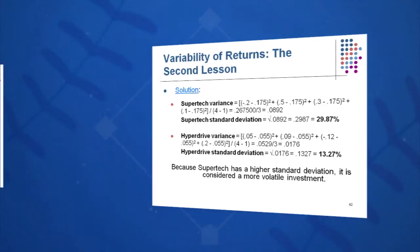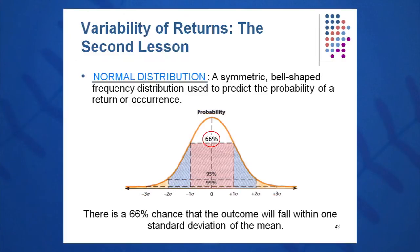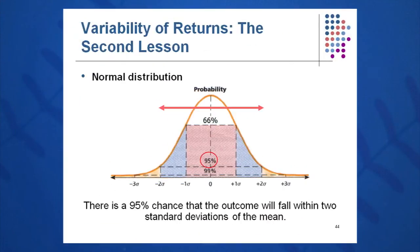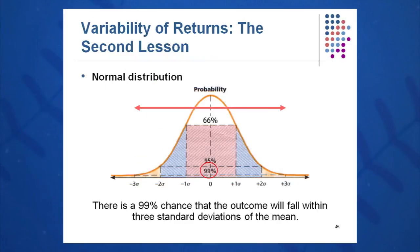Recall from statistics that if you know the mean and standard deviation, you can calculate plus or minus one standard deviation. With a large number of observations, the data tends to look like a bell curve. Once it does, plus or minus one standard deviation from the mean means a future outcome will fall in that range about 66 to 68% of the time. Plus or minus two standard deviations covers 95% of future observations, and plus or minus three standard deviations covers 99% of future outcomes.